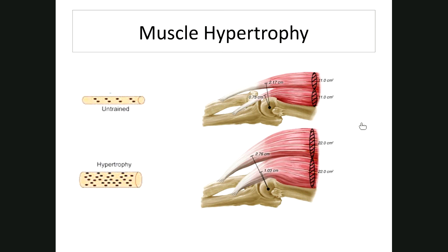Muscle hypertrophy (H-Y-P-E-R-T-R-O-P-H-Y) is when the muscle fiber increases in size as a result of an increase in diameter. When you exercise and develop larger muscles, you're not necessarily making more muscle cells — you're increasing the actin and myosin in existing muscle cells and increasing the number of myofibrils inside each cell. More myofibrils mean more sarcomeres, and therefore a stronger, more forceful contraction.